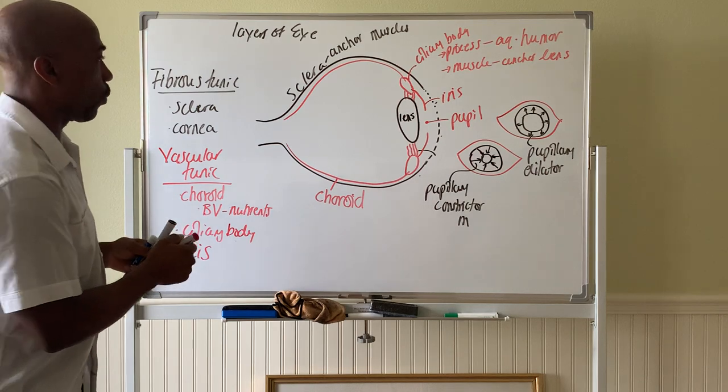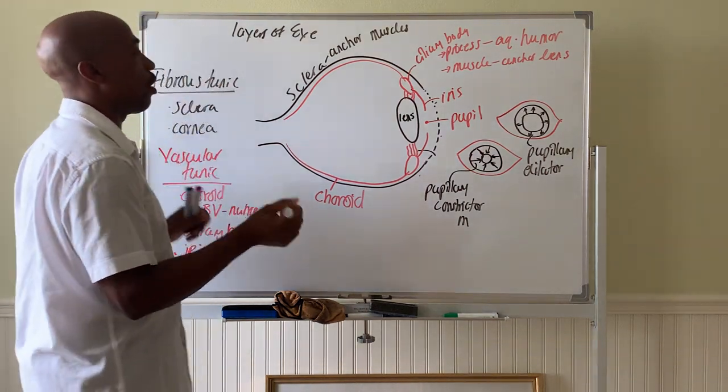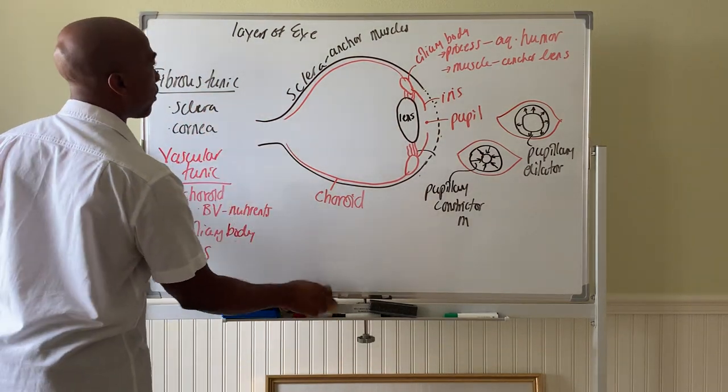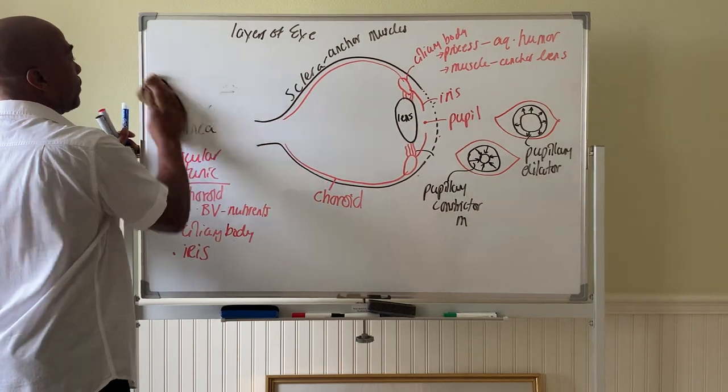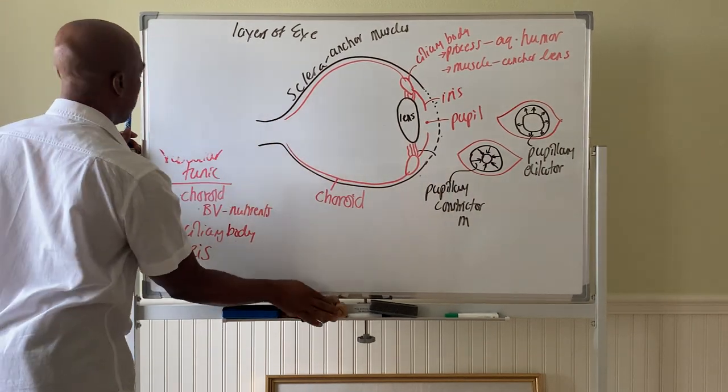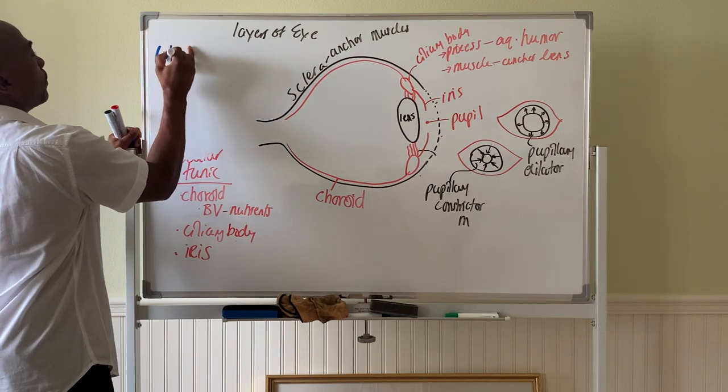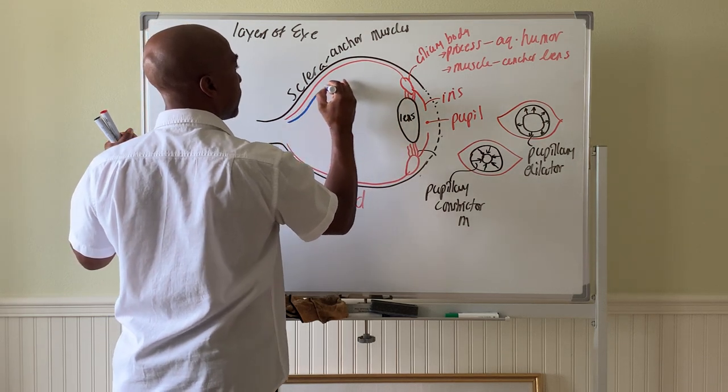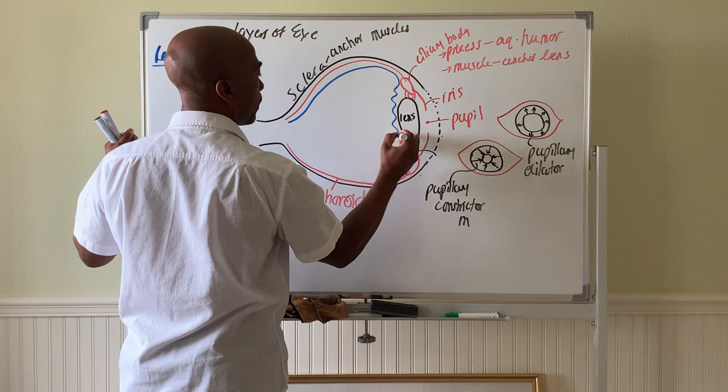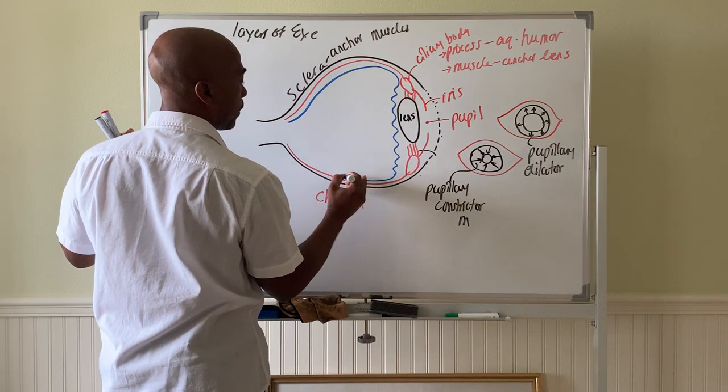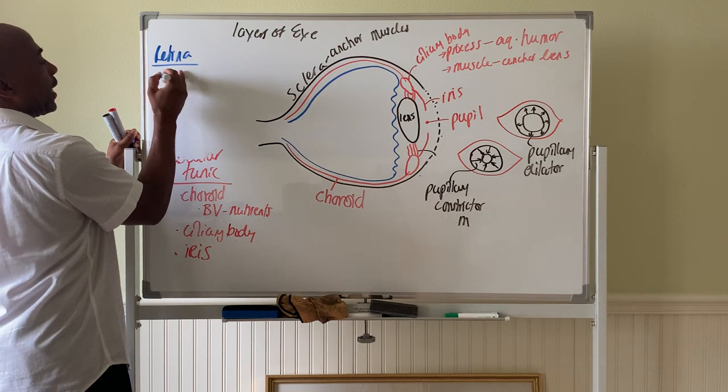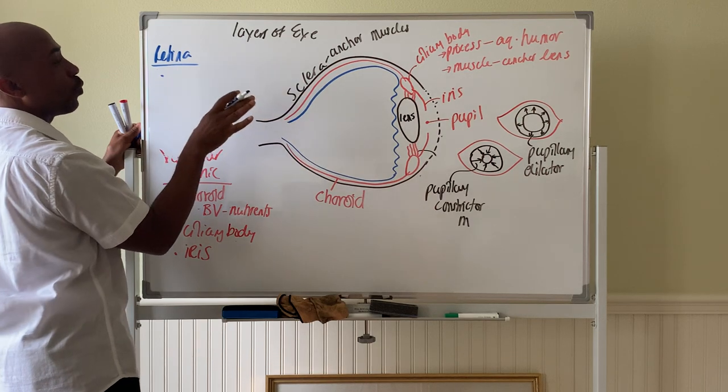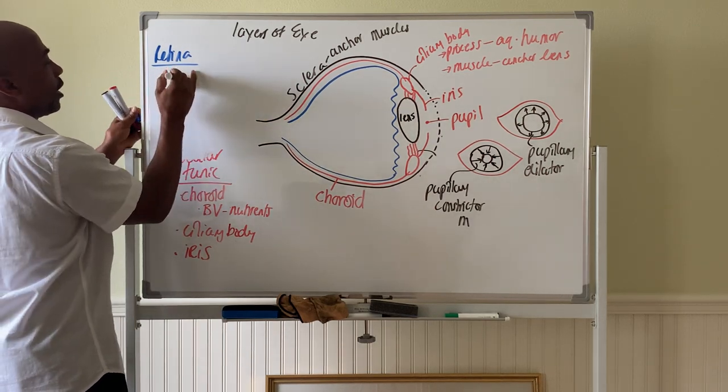And then the third layer we have is the layer called the retina. So we've done the fibrous layer, the vascular layer. Now we'll do the retina. The retina. That's the innermost tunic. Here's the retina.